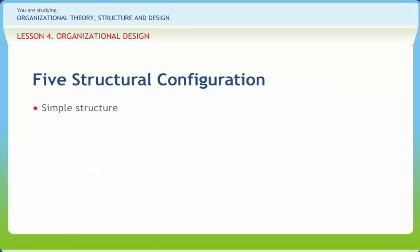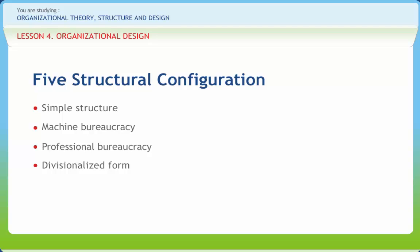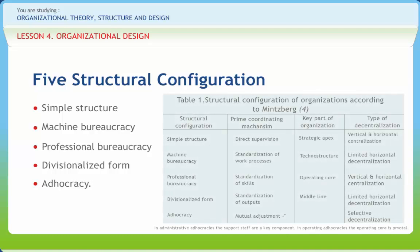The simple structure is an organization with little technical and support staff, strong centralization of decision making by top management, and a minimal middle level. Machine bureaucracies tend to fit best in large organizations using large batch and mass production in a simple and stable environment. The professional bureaucracy emphasizes the expertise of professionals in the operating core. The divisionalized form is a loosely coupled composite configuration composed of divisions, each possibly having its own structural configuration. The adhocracy is a highly organic configuration with minimal formalization, designed to fuse interdisciplinary experts into smoothly functioning ad hoc project teams.